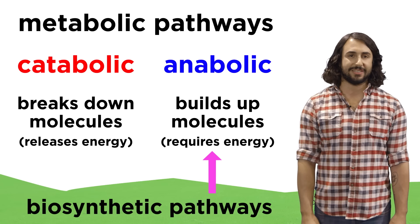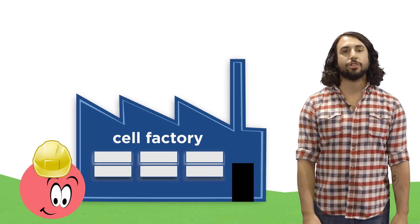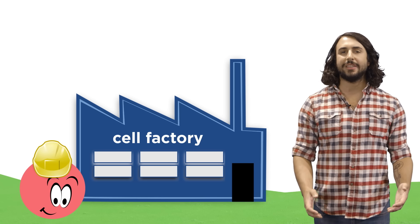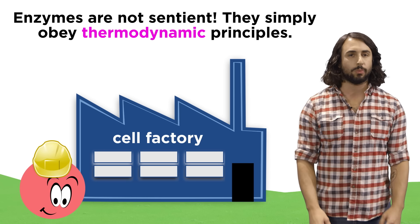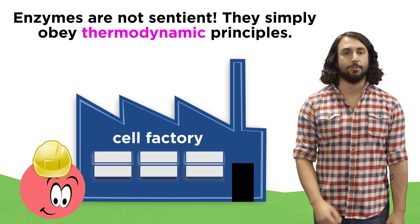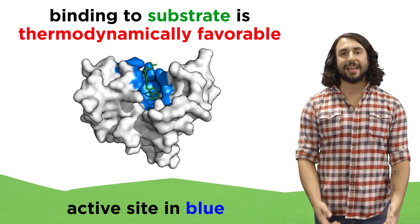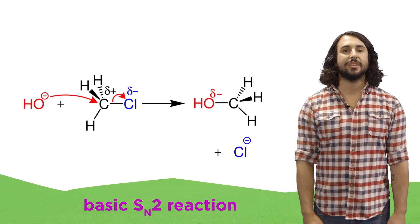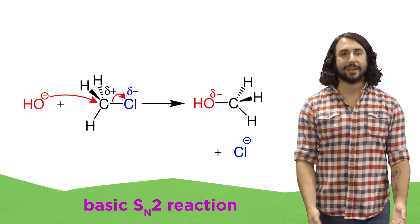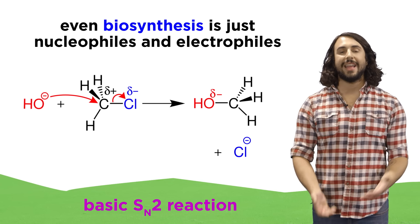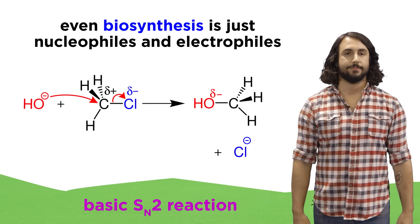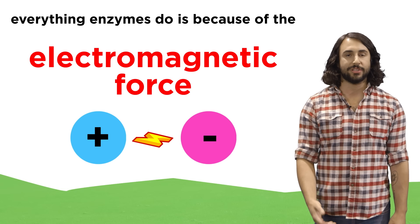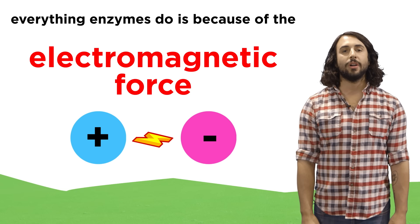The most incredible thing to consider is that while it is tempting to view these pathways as though the enzymes are tiny factory workers performing their tasks with complete sentience, it is actually the case that every single reaction in the pathway occurs simply because it is thermodynamically favorable. Enzymes recognize their substrate because of electrostatic attractions in the active site, and the reactions they catalyze are fundamentally no different than the simple reactions between small molecules that we learned in organic chemistry. There's a nucleophile and an electrophile in proximity so a reaction occurs. This means that everything we will discuss is just a consequence of the electromagnetic force operating on biomolecules — nothing more than plus and minus.